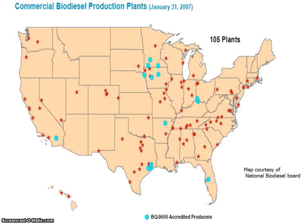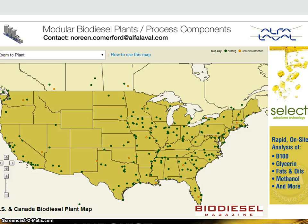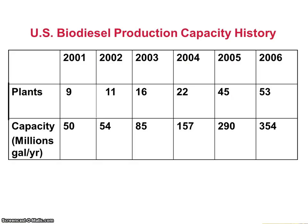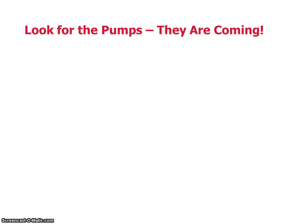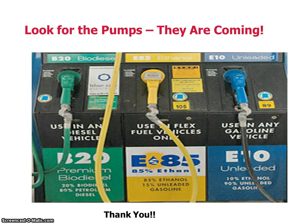This is an old picture of the United States from 2007, showing the biodiesel plants — at that time there were 105 biodiesel plants. But here in 2013, this map from Biodiesel Magazine shows 206 biodiesel plants in the United States with another 15 under construction. In 2006 they had a capacity of 354 million gallons per year, but with 206 plants that has increased to 2,943 million gallons per year. So look for the pumps — they're coming soon to a station near you. If you have any questions, put them up in the discussion board. Thank you.